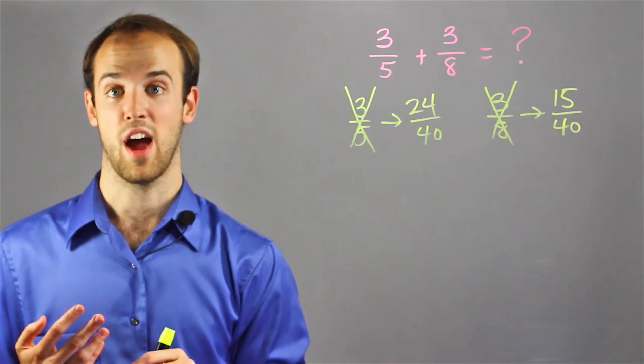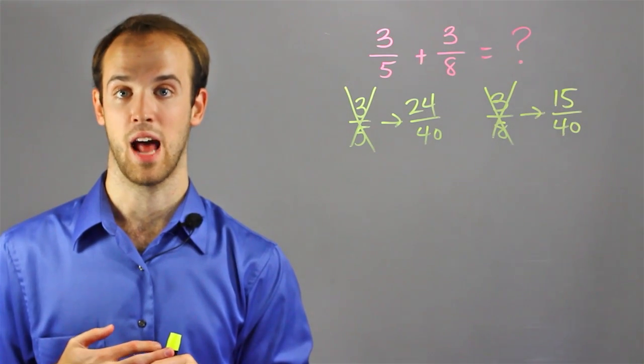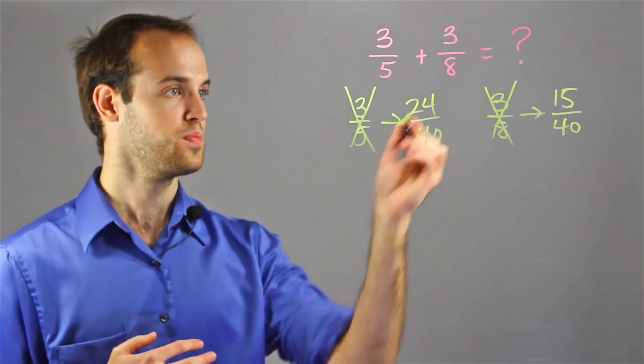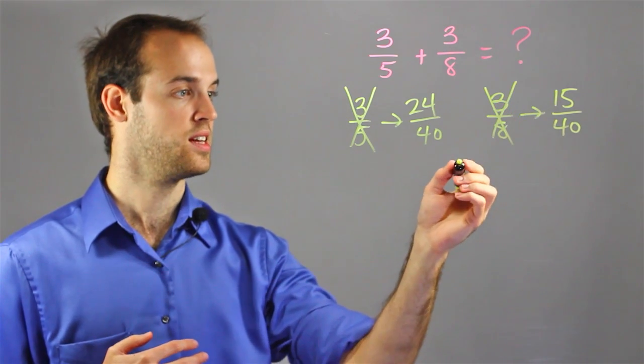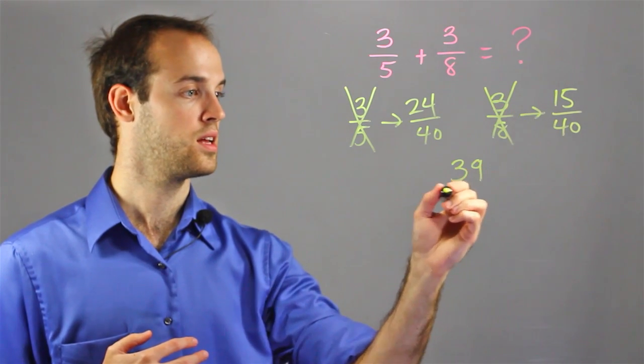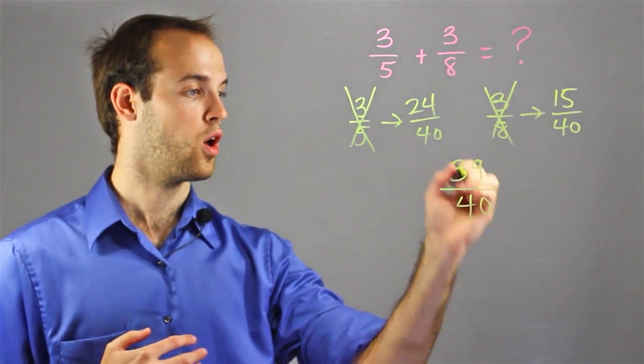And to add these fractions, all I do is add the numerators and keep the denominators exactly the same. So 24 plus 15 is 39 over 40.